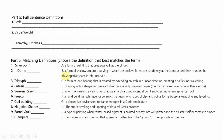Sunken relief, five, is B — a form of shallow sculpture carving in which the positive forms are cut deeply at the contour and then rounded, but the negative space is left uncarved. Fresco, six, is I — a type of painting where water-based pigment is painted directly into wet plaster; the plaster itself becomes the binder. Coil building, seven, is F — a hand-building technique for ceramics that uses long ropes of clay.